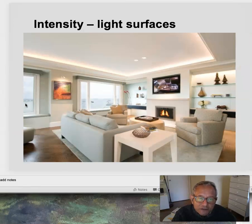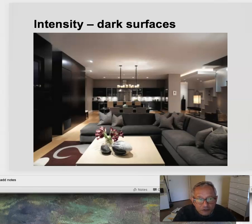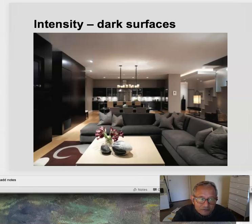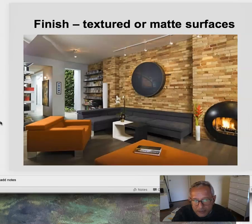Intensity — we're lighting the surface. There's a recessed cove with linear fixtures lighting the ceiling, and also linear fixtures lighting a shelf. We can also deal with dark surfaces — there's a little bit of light shining on dark surfaces, but for the most part we're going to let them stay dark. Even with lights shining on them directly, we're not getting a lot of light off dark surfaces, so it's very important to think about that in your lighting design. Finish makes a big difference — is it shiny or flat? Shiny is going to reflect light; flat surfaces tend to absorb light more. Textured or matte surfaces will absorb more light.